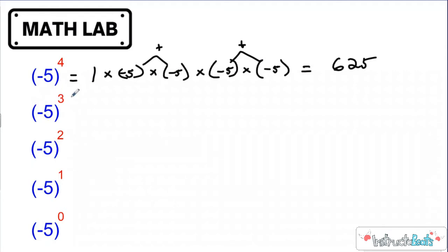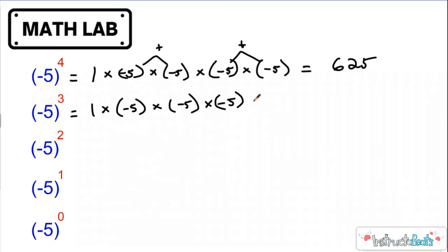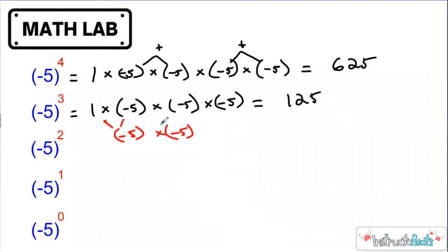Now let's check out negative five to the third power. I'm starting with my one and then multiplying by three copies of negative five — that's what my exponent told us, and my base is negative five. I know that gives us 125 in absolute value. Five times five times five is 125. So should it be negative or positive? One times negative five is negative five. Negative five times negative five is positive 25, because two negatives make a positive. And then positive 25 times negative five is negative 125. So negative five to the third power, following negative multiplication rules, gives me negative 125.